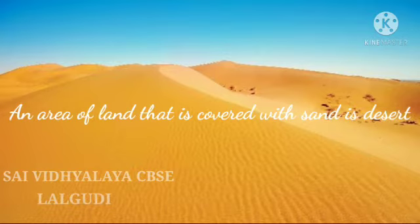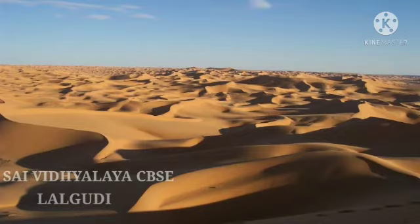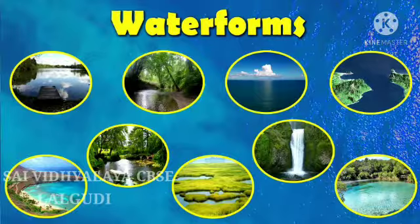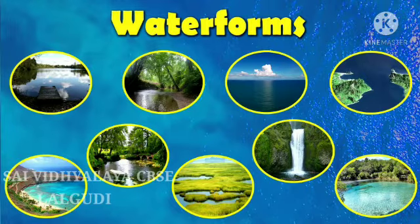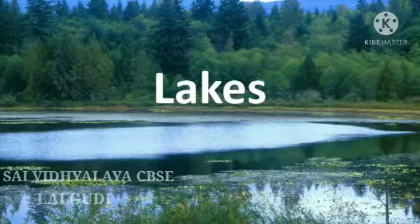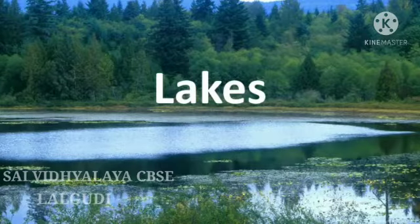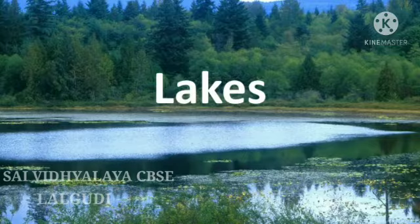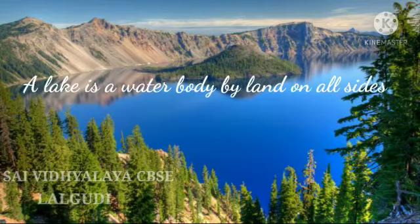A desert is an area of land covered by sand. It is a place where almost no rain falls. Some deserts are huge areas of sand and are flat. Water is found in different forms — lakes, ponds, rivers, seas, and oceans. A lake is a large water body surrounded by land on all sides, in which the water is fresh.